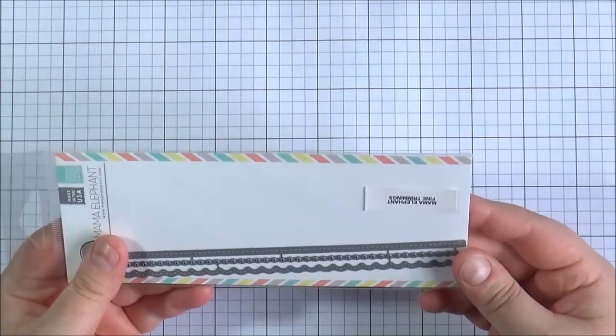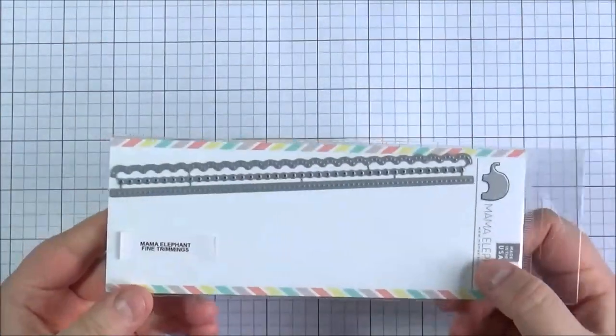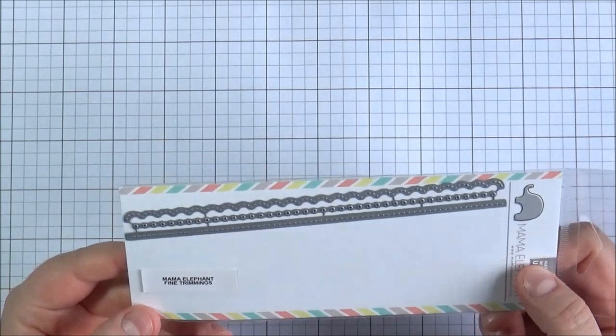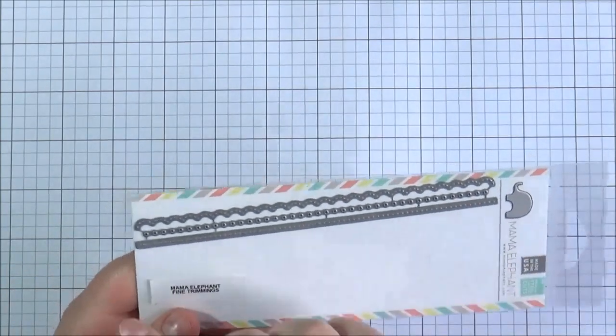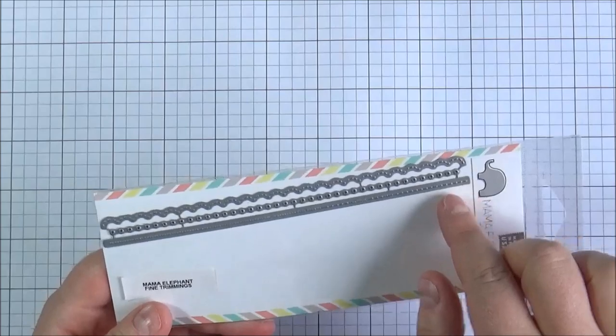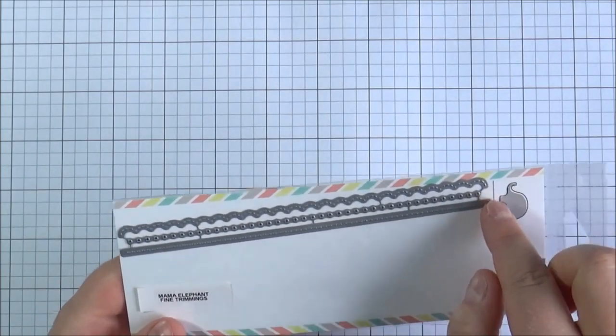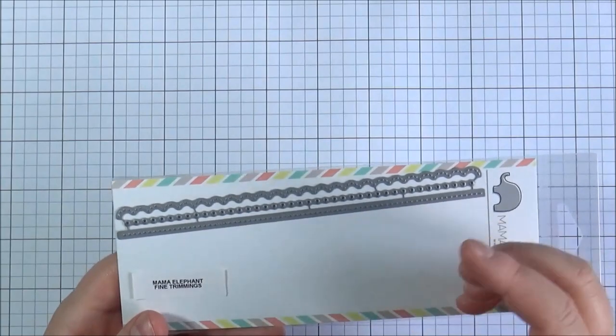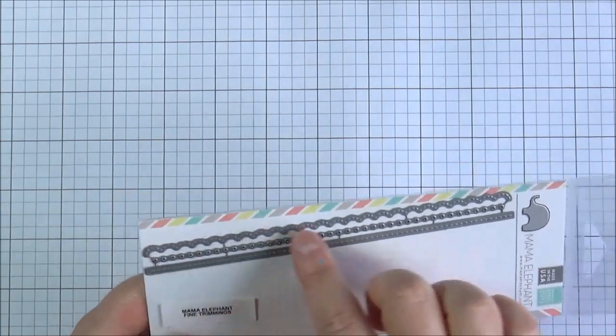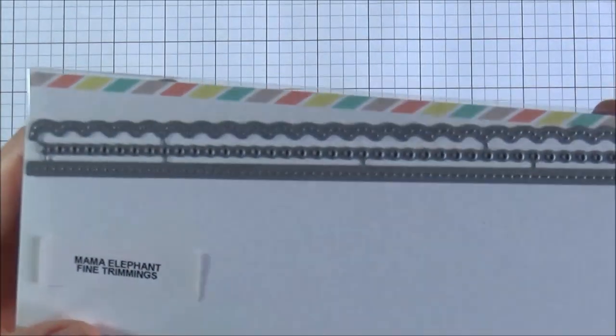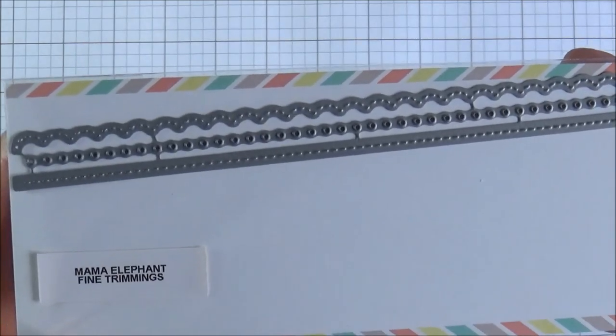And then I also purchased the Fine Trimmings die collection. I just thought they were really nice. I don't actually have any border strips like this. So this one's stitching. The next one's got tiny little holes. And then you've got a scallop stitched border as well. I don't know how well you can see that on camera. But really nice.